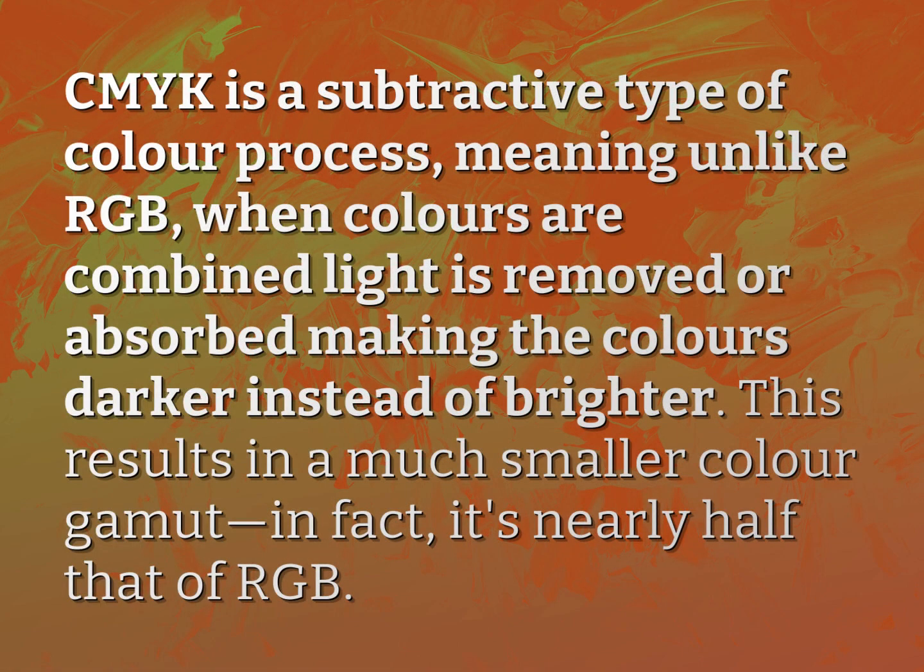CMYK is a subtractive type of color process, meaning unlike RGB, when colors are combined, light is removed or absorbed, making the colors darker instead of brighter. This results in a much smaller color gamut — in fact, it's nearly half that of RGB.